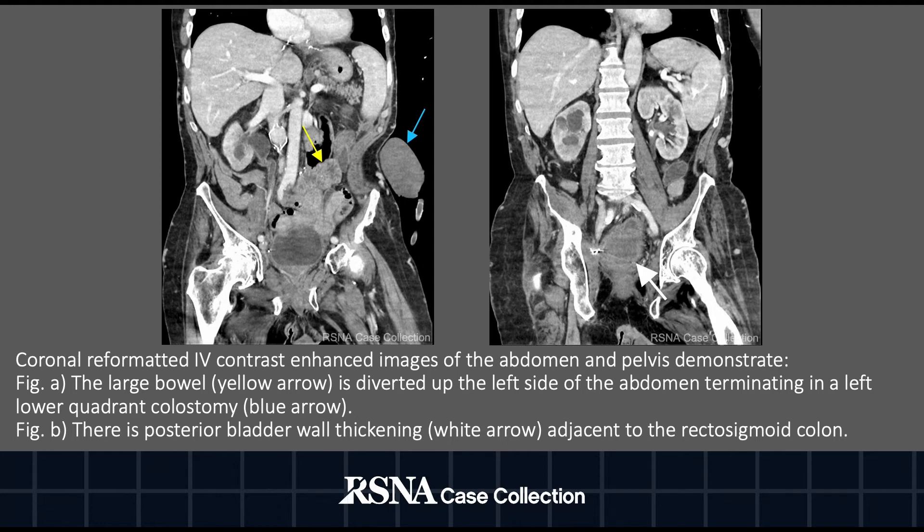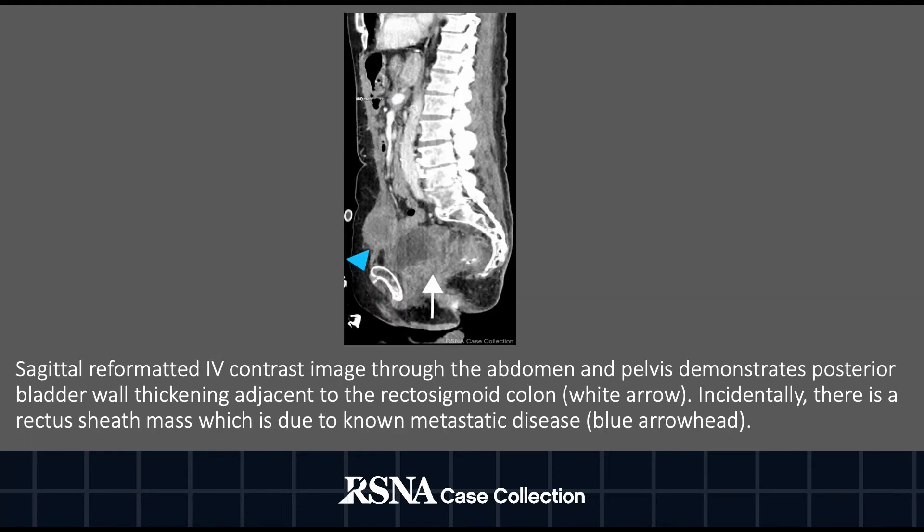On figure B, we can see that there's posterior bladder wall thickening demonstrated by the white arrow adjacent to the rectosigmoid colon. Sagittal reformatted images re-demonstrate posterior bladder wall thickening adjacent to the rectosigmoid colon.